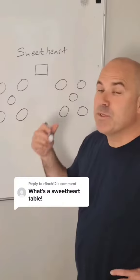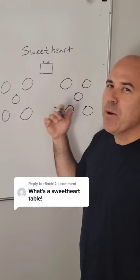Good question. So a sweetheart table is just the two of you sitting here. It's really nice, you get a moment just to yourself and the wedding party usually sits with their plus ones, and you have a few for like a parent table here and here.